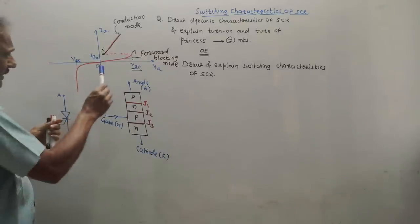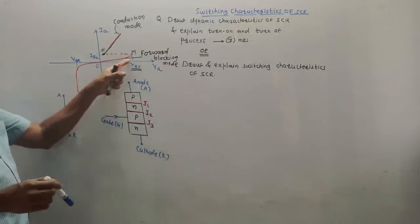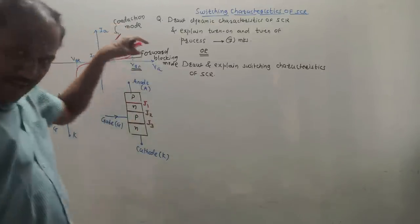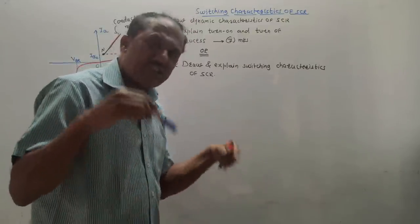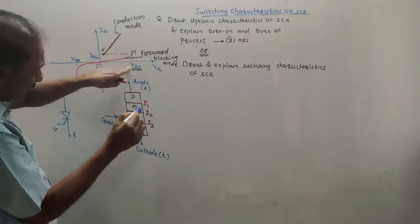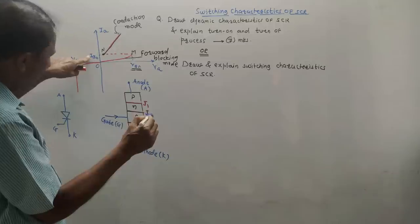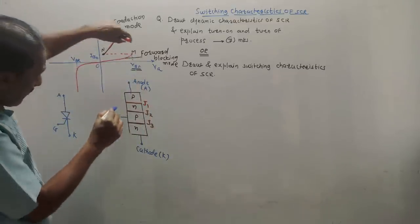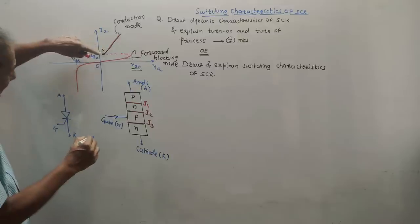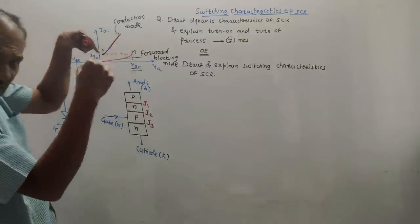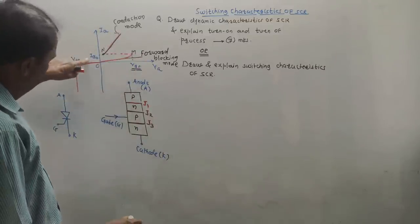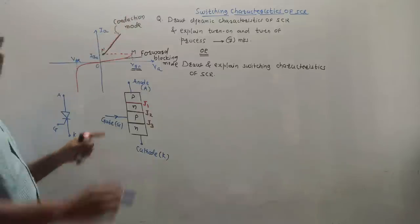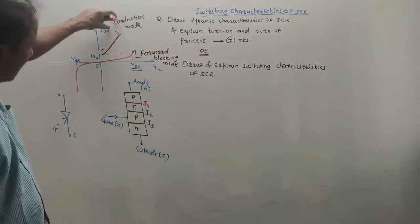We need to apply a certain amount of gate current and accordingly the turning on and turning off of this device is controlled. Now consider the curve zero to M — this is the forward characteristics of SCR, known as the forward blocking mode. From zero to M, the SCR is on but has not yet started conducting. There are typical values: VBO (forward break-over voltage) and IBO (forward break-over current) at point M, which then shifts to point N indicating the conduction mode.